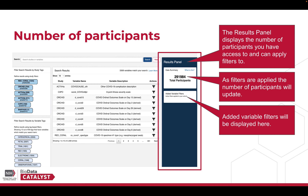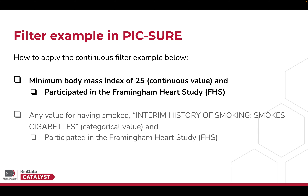In PICTURE, you can see the results panel on the right-hand side of the screen. In the results panel, the data summary box displays the number of participants you have access to and can apply filters to. As filters are applied, the filters will be displayed in the Added Variable Filters box and the number of participants in the data summary box will update.